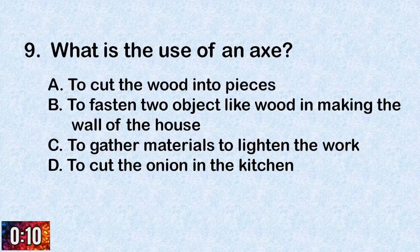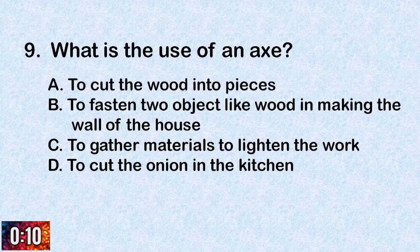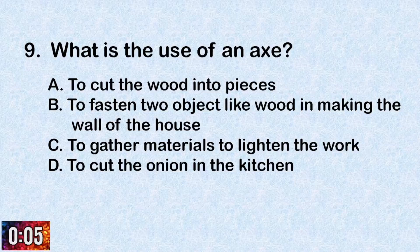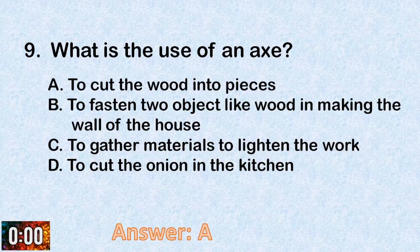Number nine: What is the use of an axe? A. To cut the wood into pieces. B. To fasten two objects like wood in making the wall of the house. C. To gather materials to lighten the work. D. To cut the onion in the kitchen. The correct answer is letter A, to cut the wood into pieces.